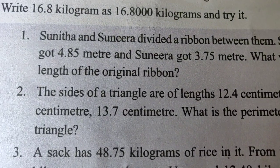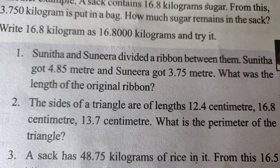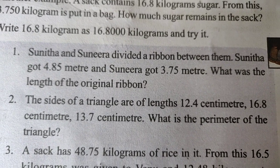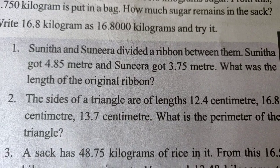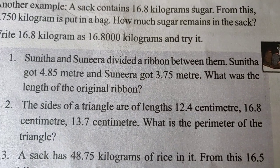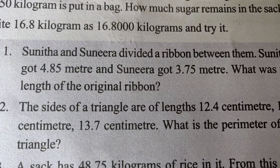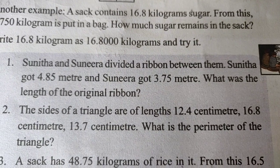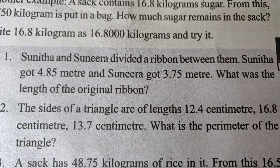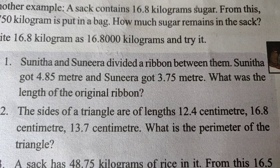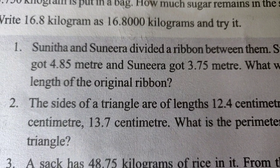Second question. The sides of a triangle are of lengths 12.4 cm, 16.8 cm, and 13.7 cm. What is the perimeter of the triangle? To find the perimeter of a triangle, we add all three sides together. So the perimeter equals 12.4 plus 16.8 plus 13.7.